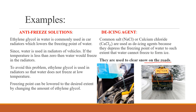To remove snow from roads, de-icing agents such as NaCl or calcium chloride are spread on the road. This causes the snow present on the road to melt, because these de-icing agents depress the freezing point of water, preventing it from staying frozen.